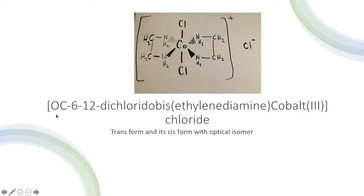This presentation is about octahedron 1,2-dichlorido bis ethylenediamine cobalt(III) chloride and its cis isomers. Let's start by first addressing how to name this complex.